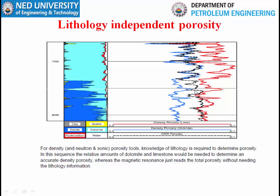For example, in a log section with a mixture of dolomite and calcite, to calculate density porosity we need the matrix density — which should be the average density of calcite and dolomite at each depth — and this varies at each depth. But NMR does not require any matrix density; it provides lithology-free porosity. Sometimes it is more accurate than other tools. Similarly, NMR also provides an estimate of permeability — the only log to do so. We cannot estimate permeability through caliper log, SP log, or resistivity log — they can only guess.